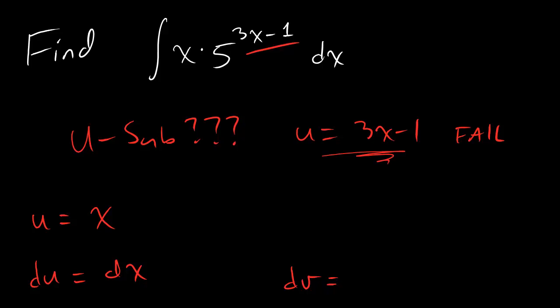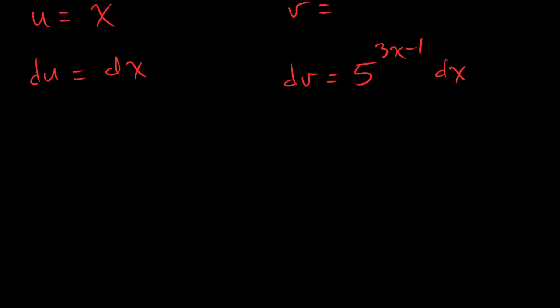Now, that means that dv has to be equal to 5 to the 3x minus 1 dx. And that means that when we find v, well, v's not going to be that bad, but in order to find v, we actually have to do some u substitution. So, no point in moaning about it, let's get cracking.